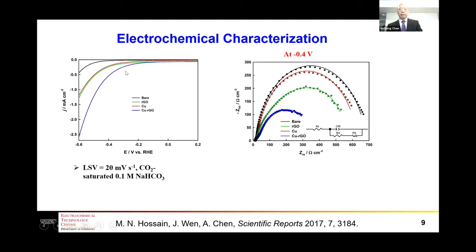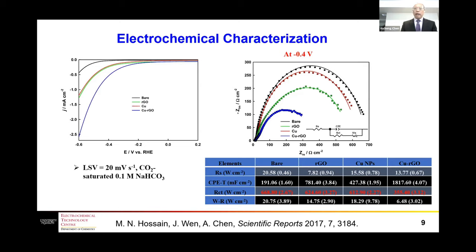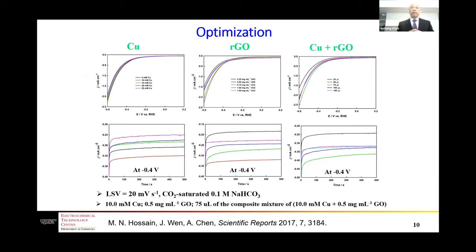When we hold the potential at minus 400 millivolts and measure electrochemical impedance spectroscopy, we use an equivalent circuit to fit the curve. The fitting results show that the charge transfer resistance for the copper–reduced graphene oxide nanocomposite is much lower, which is why we can increase the activity for CO2 reduction.